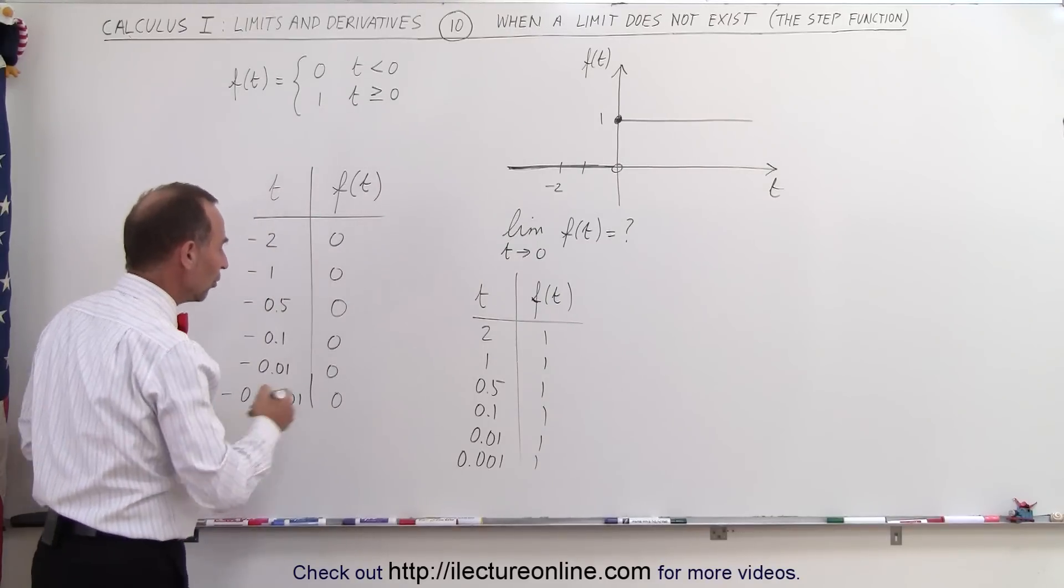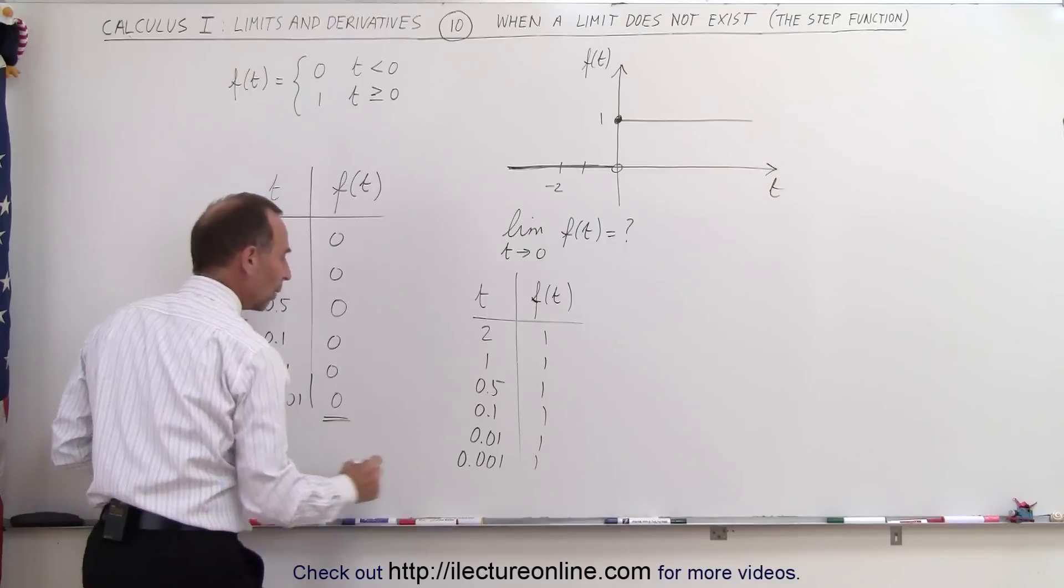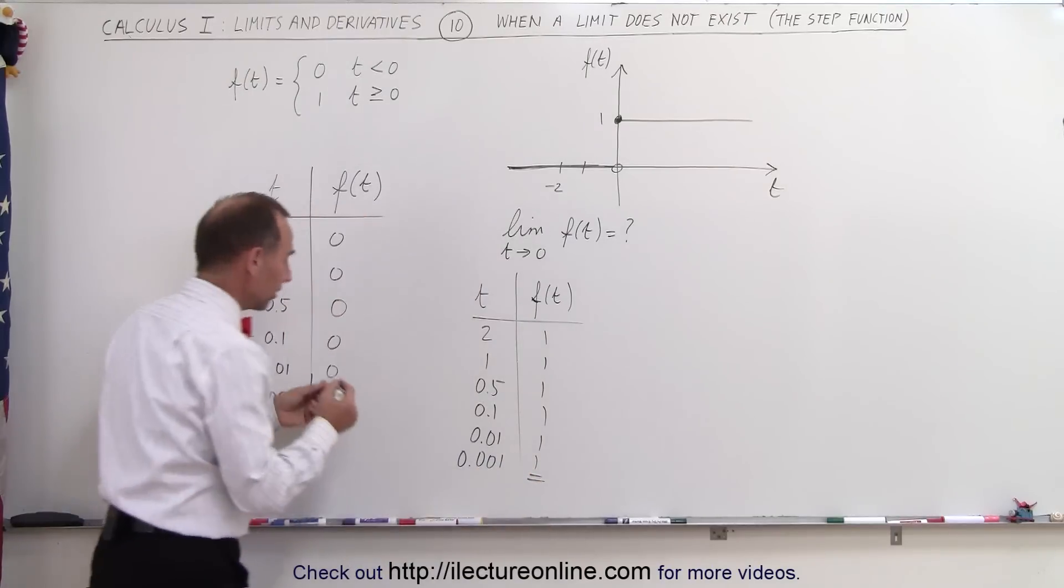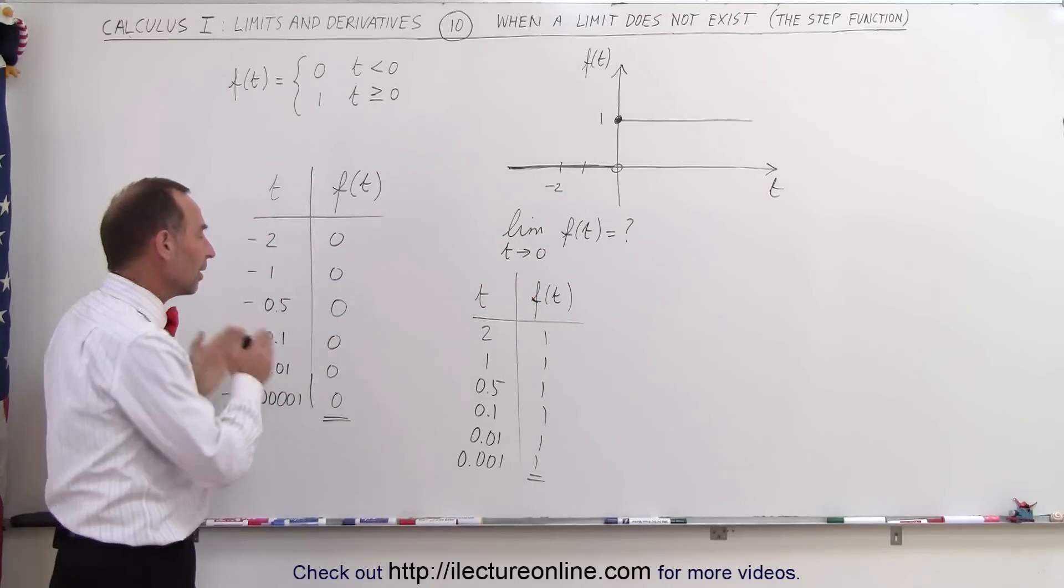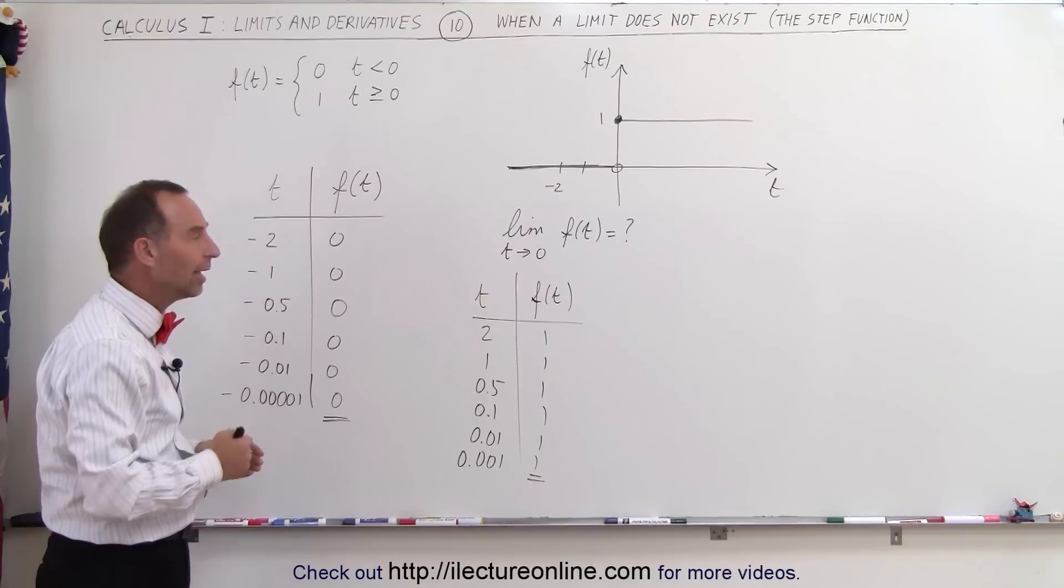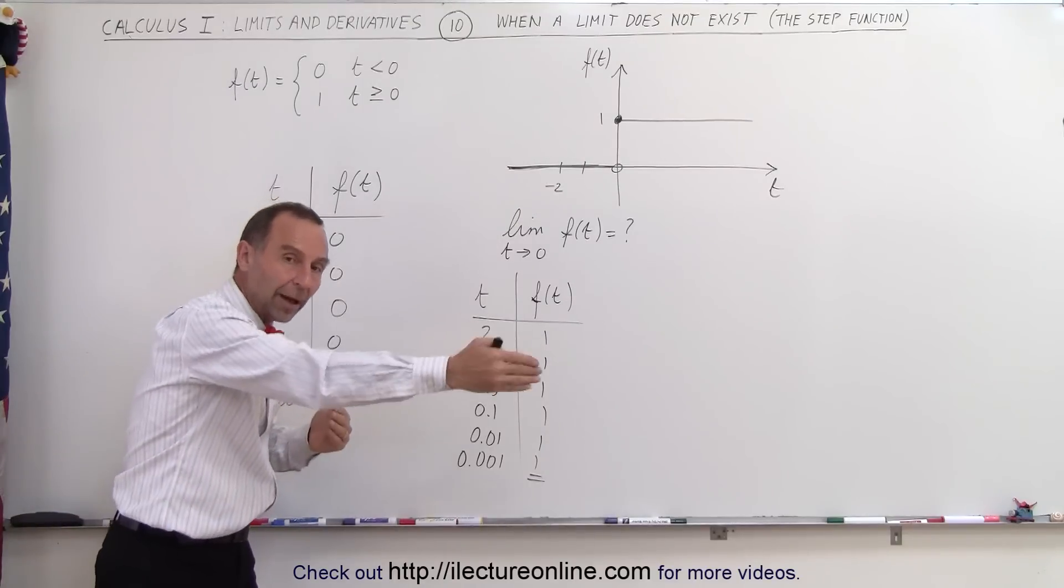If we converge down to 0 using this technique, and in that case we get two different values, there is no limit for that evaluation.